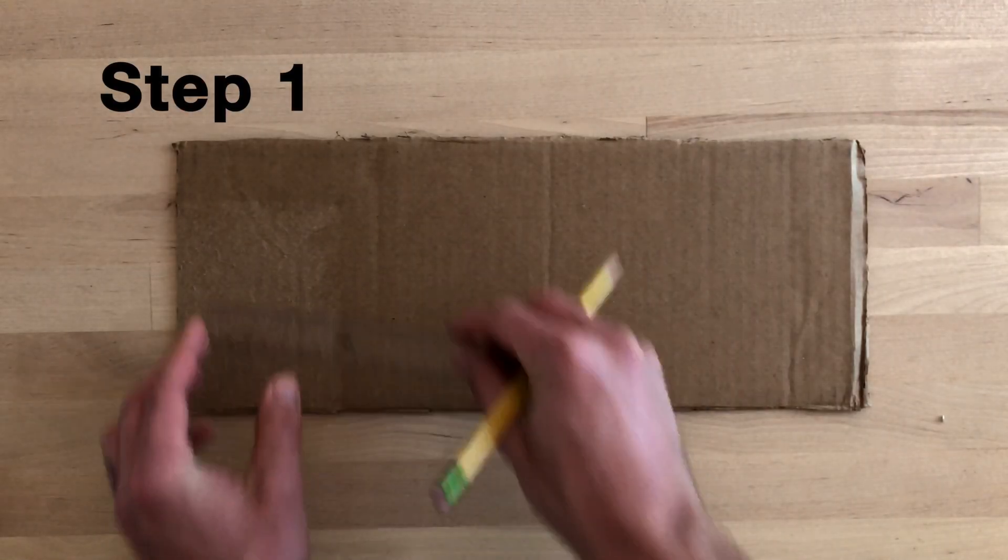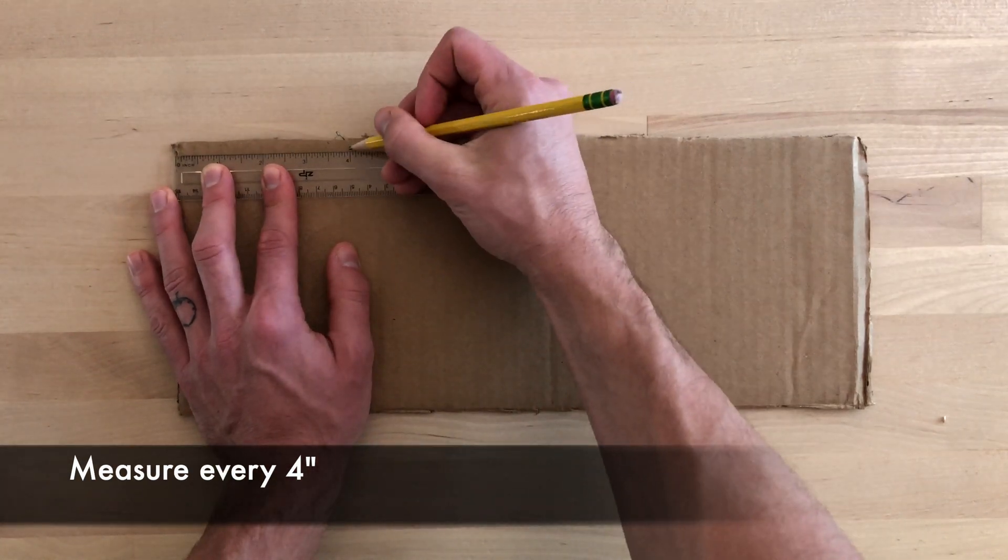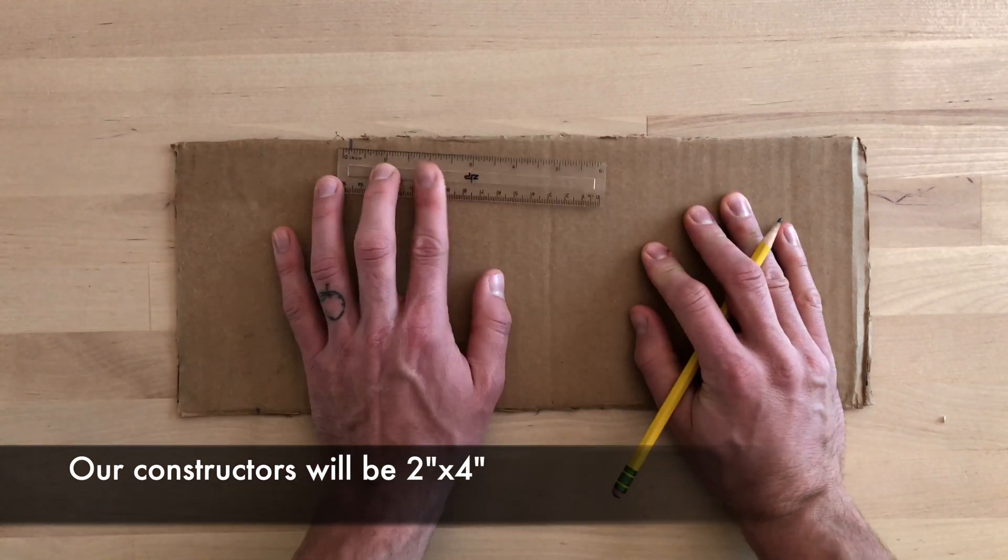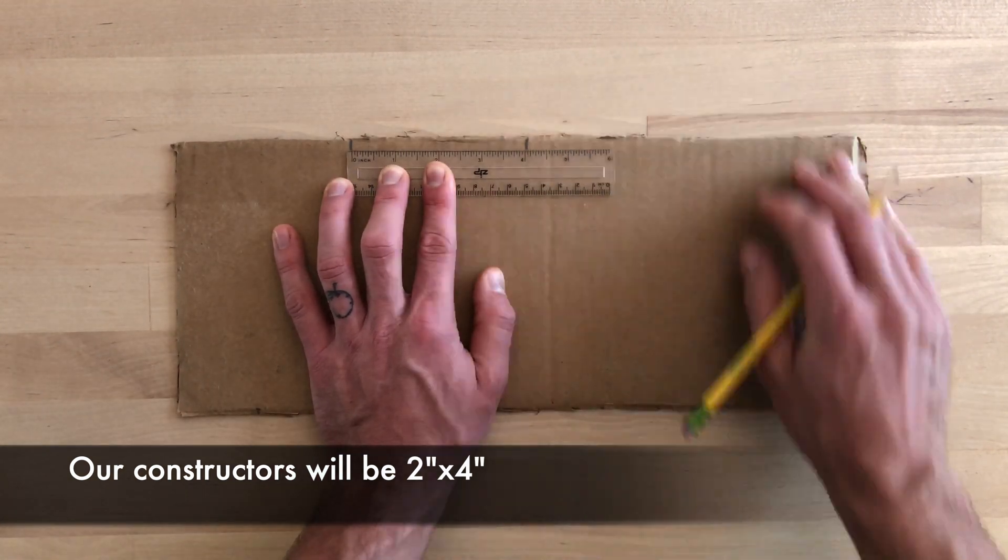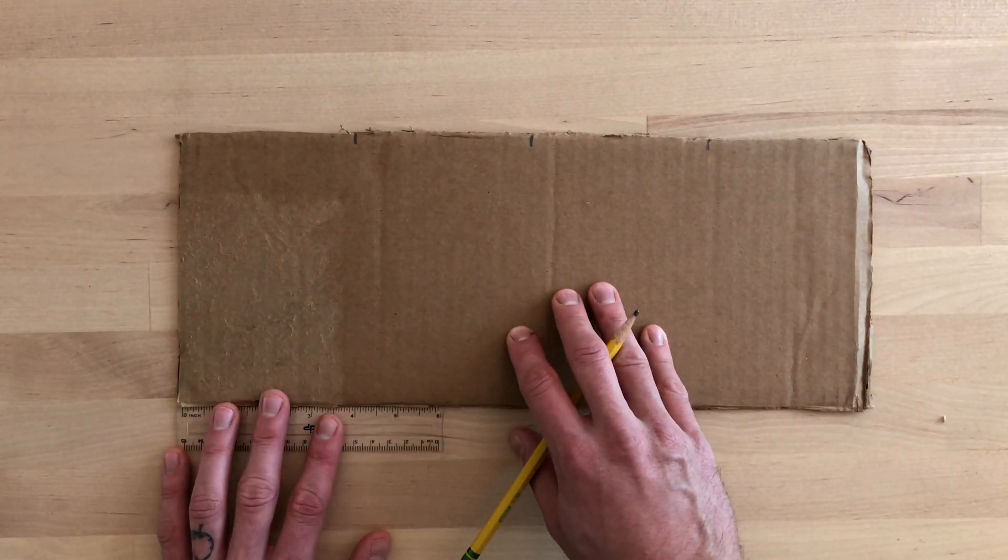Step one. The first thing we need to do is to measure the length of our constructors. They will be four inches long. Remember that they will be two by four inches, and so we need to get as many as we can out of our cardboard.